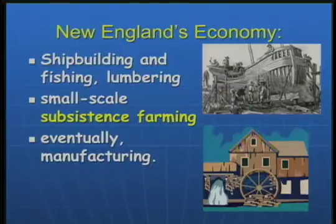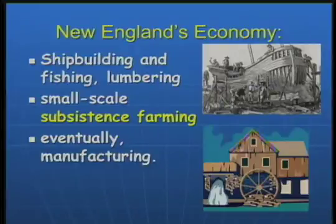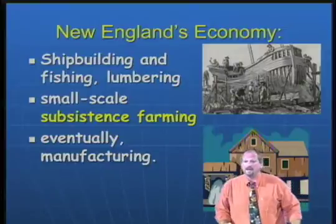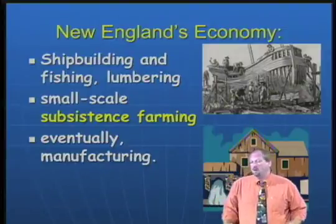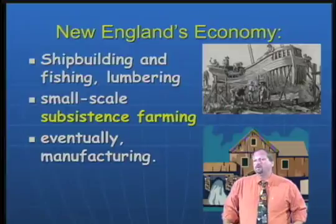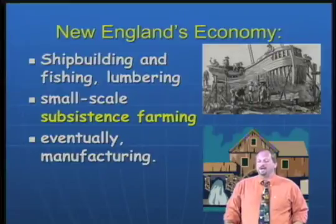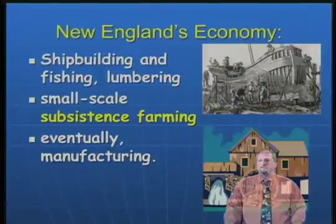This makes a lot of sense because they had a lot of lumber there, a long coastline for fishing, and of course a great place to build ships. Small-scale subsistence farming — subsistence means growing only enough to survive, and they had to grow on a small scale because the soil was very rocky and the growing season was very short. Eventually they developed manufacturing, utilizing the power of the river as a source of power for a factory.